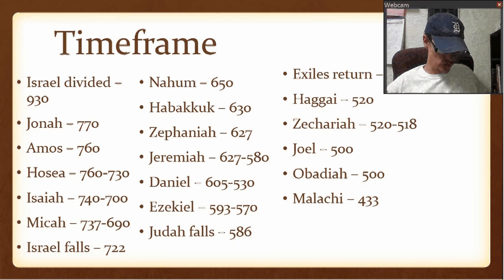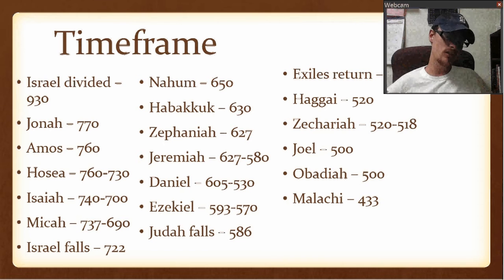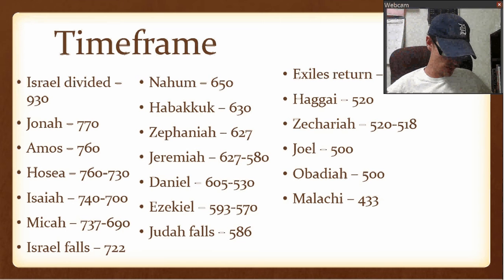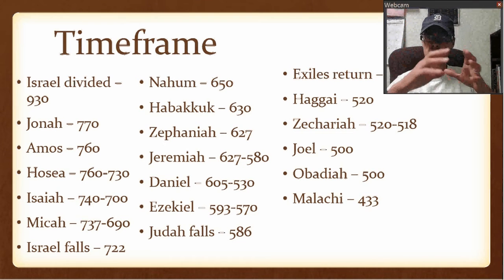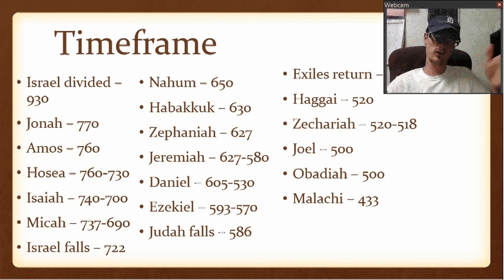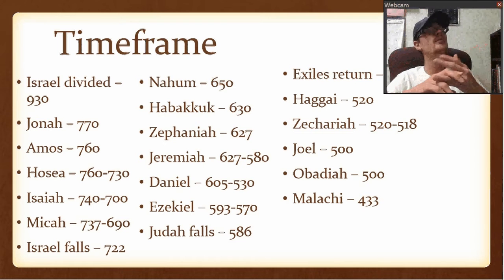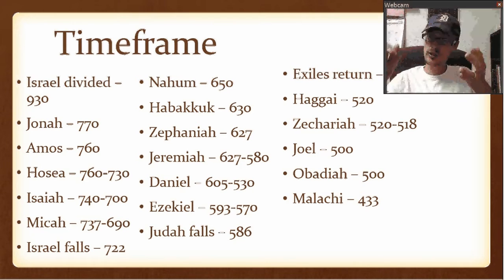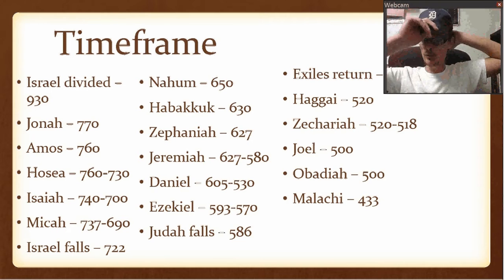Ezekiel was to Judah, but then he was exiled into Babylon and continued to prophesy there. And then Judah fell in 586, which takes us to really no prophets — just kind of a lull until the exiles returned in 538. And then there's Haggai and Zechariah, which are both mentioned in Ezra — about building the temple. They encouraged the people to rebuild the temple.